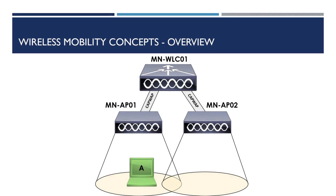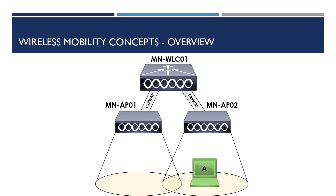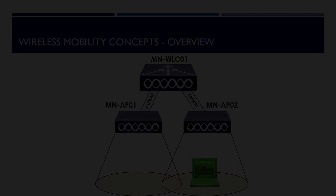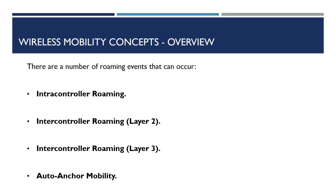Let's recap on what a wireless roam is. A wireless roam occurs when a client moves from one access point to another. Wireless networks can be deployed in a number of different topologies, and depending on our wireless design, there are a number of different roaming events that can occur. These include intra-controller roaming, inter-controller roaming layer two, inter-controller roaming layer three, and auto-anchor mobility.